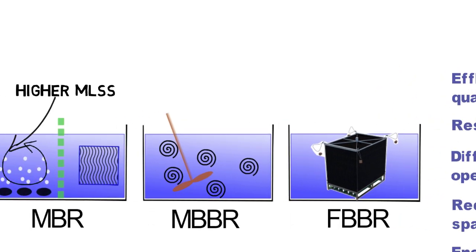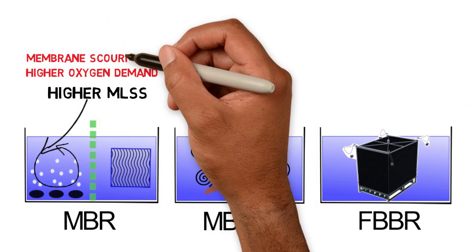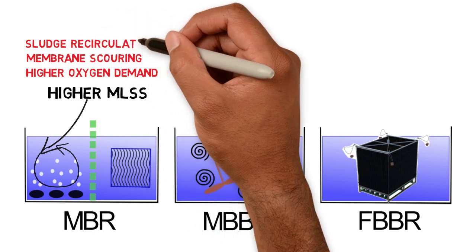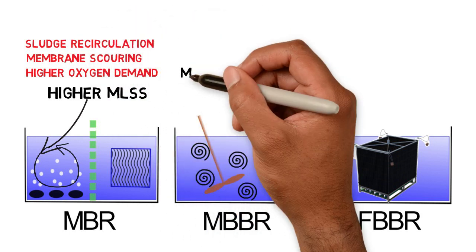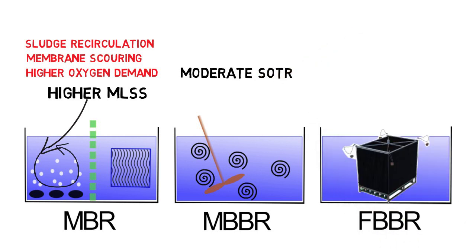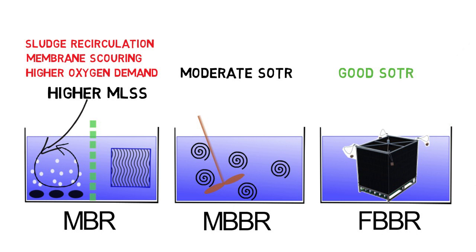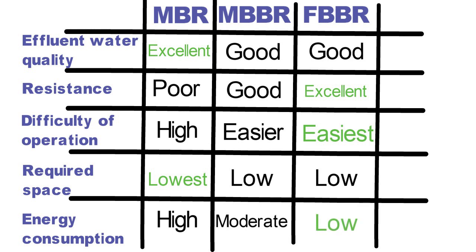Energy consumption. Due to higher MLSS permanent back washing of the membrane and fouling prevention, MBRs need a high air volume thus have a high energy demand and cost. FBBRs require less energy than MBBRs because the air supply of the biofilm is installed directly underneath the fill media, which results in a better oxygen intake.